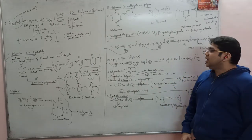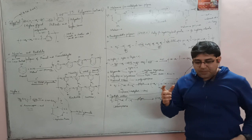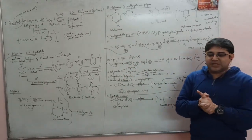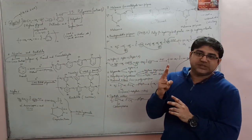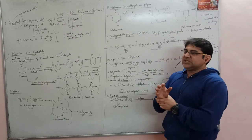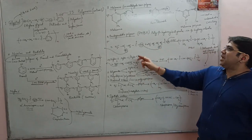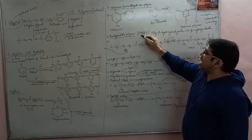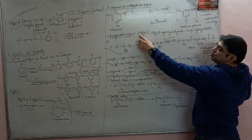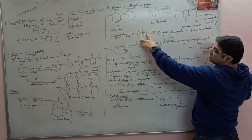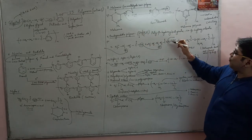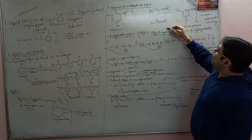Biodegradable polymers are those that can be decomposed by the action of microorganisms into simple and non-harmful substances. Most polymers we encounter are non-biodegradable. There are two biodegradable polymers to cover. The first is PHBV — poly(hydroxybutyrate-co-beta-hydroxyvalerate): poly-beta-hydroxybutyrate has four carbon atoms and beta-hydroxyvalerate has five carbon atoms.